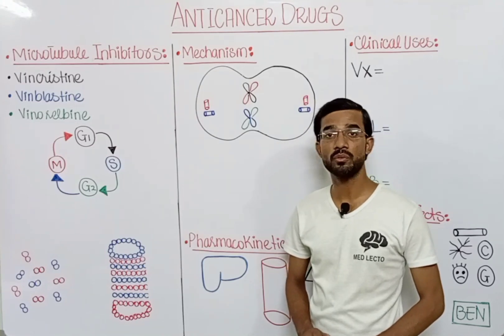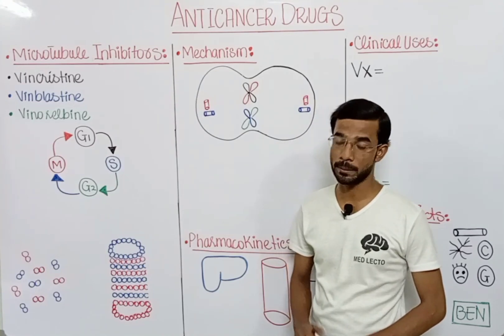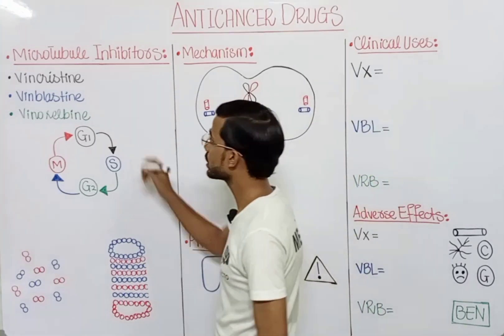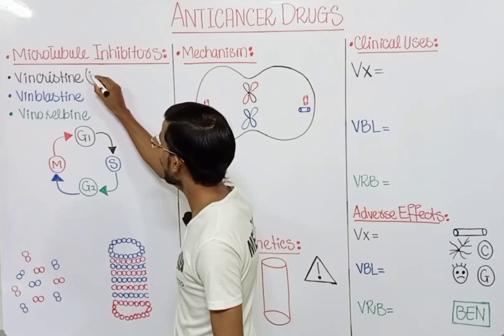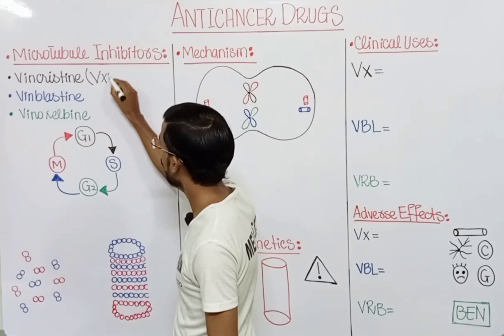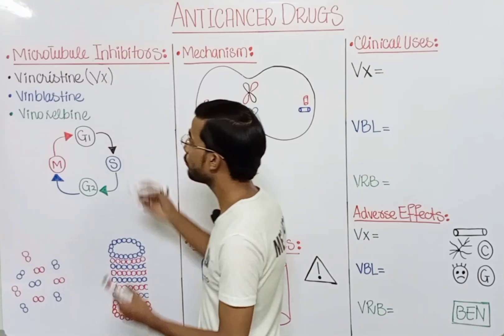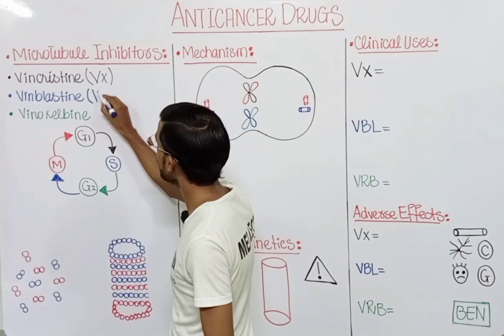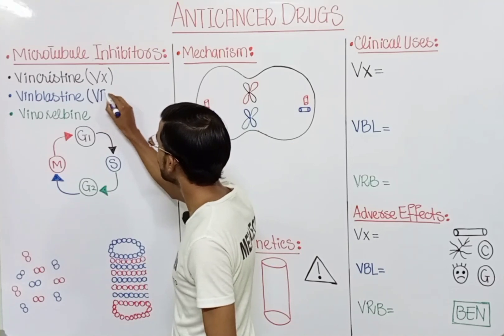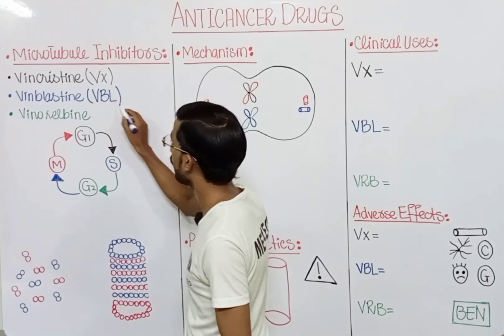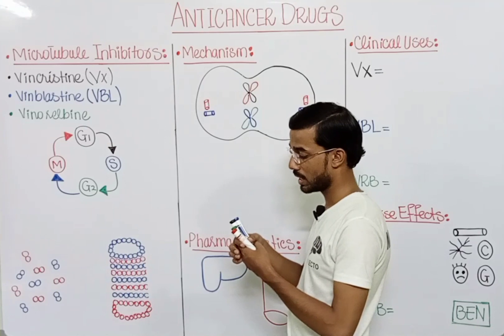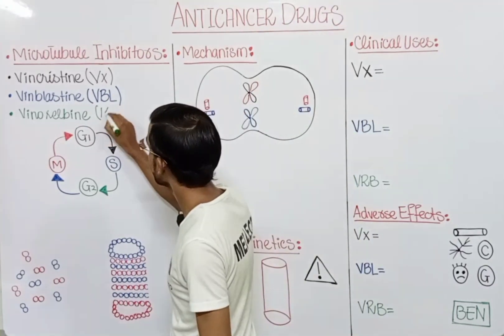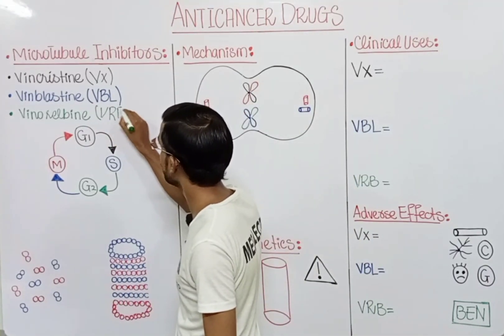The three drugs are Vincristine, Vinblastine, and Vinorelbine. Vincristine can also be written as VCR. Vinblastine can be written as VBL. And Vinorelbine can be written as VRB.